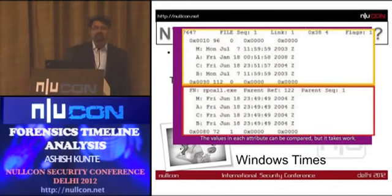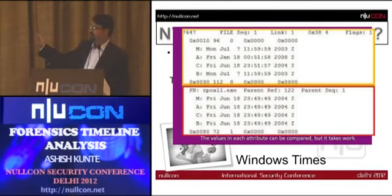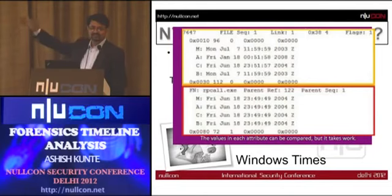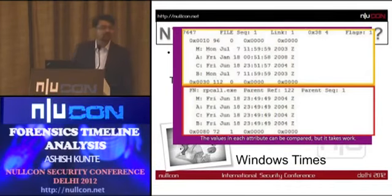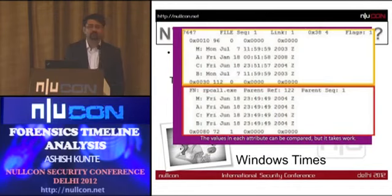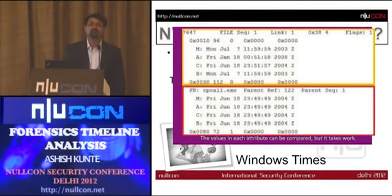Here is an example of timestomping. The upper portion shows the standard information attribute for the file RPC_call.exe — the M date and C date are different. But if you look at the file name attribute for RPC_call.exe, the timestamps are all the same. Even just looking at the timestamps directly, you can know something is fishy — there was some timestomping done on this RPC_call.exe just to confuse the forensic analysis.